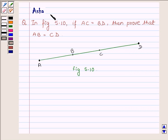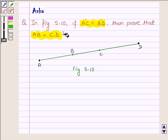Hi and welcome to the session. I am Ashura and I am going to help you with the following question which says in figure 5.10, if AC is equal to BD, then prove that AB is equal to CD.